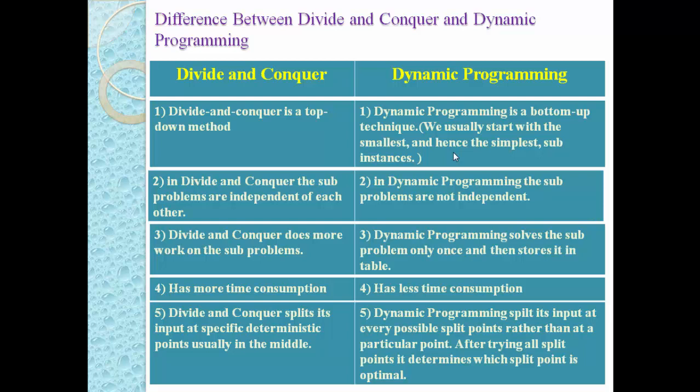In divide and conquer, we focus on the solution of each and every subproblem. In dynamic programming also we have a number of subproblems and we solve each one, but we solve only once and then store the solution inside a table. In divide and conquer every subproblem is independent, but in dynamic programming all subproblems are not independent — they are directly connected to each other.